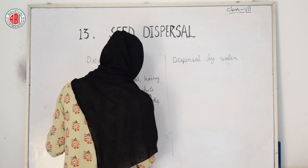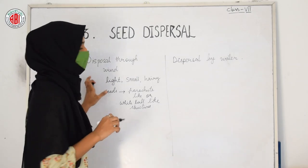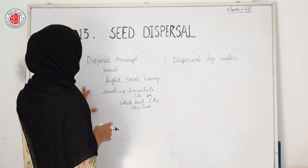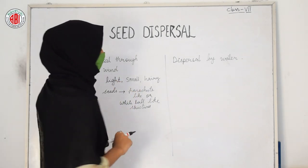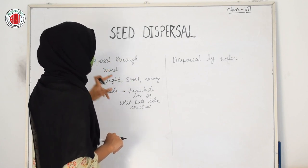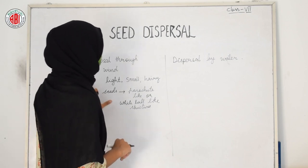Some seeds show adaptations — their structures are like white balls or like parachutes. Because of these adaptations, they can be carried away to distant places through wind. So if the seeds are light, small, hairy, or adapted with parachute-like or white ball-like structures, they will be carried to distant places through wind.